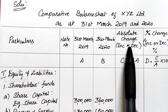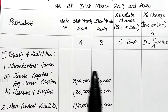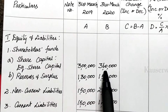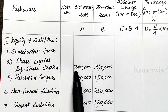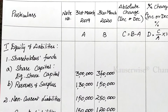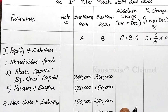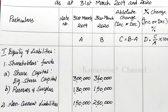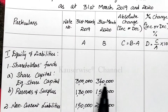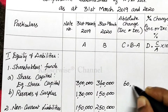Now let us calculate absolute change by comparing 2020 data with 2019 data. For equity share capital: current year 3,60,000, previous year 3,00,000 — difference is 60,000 increased, so enter 60,000. For reserves and surplus: current year 1,50,000, previous year 1,30,000 — difference is 20,000 increased, so enter 20,000. For non-current liabilities: current year 2,50,000, previous year 1,50,000 — difference is 1,00,000 increased. In case of any negative value, enter it within brackets.